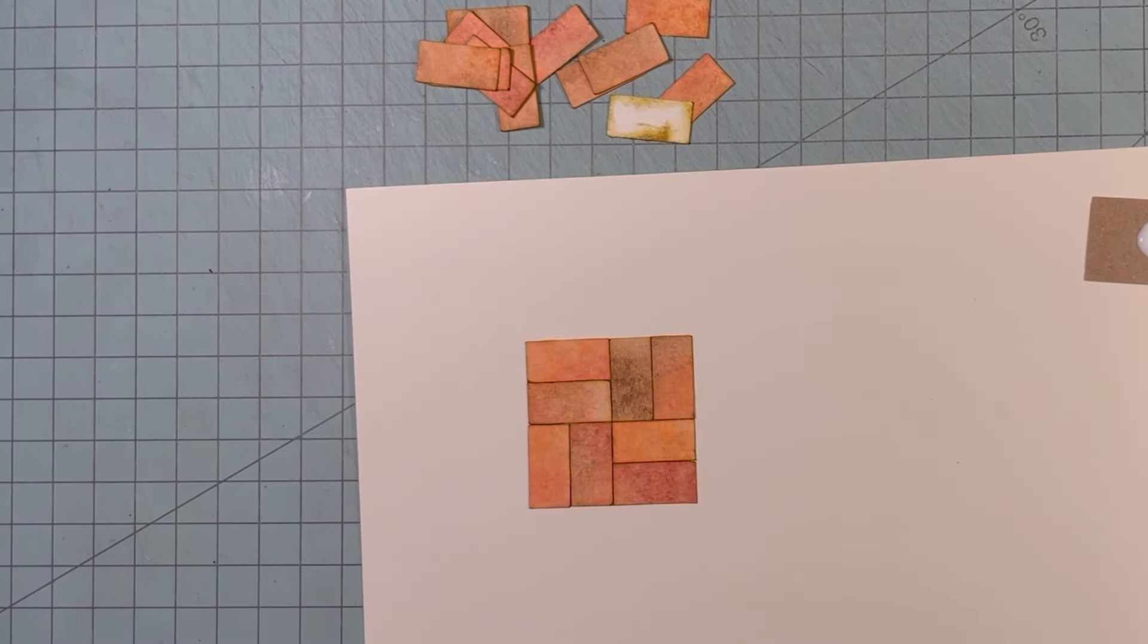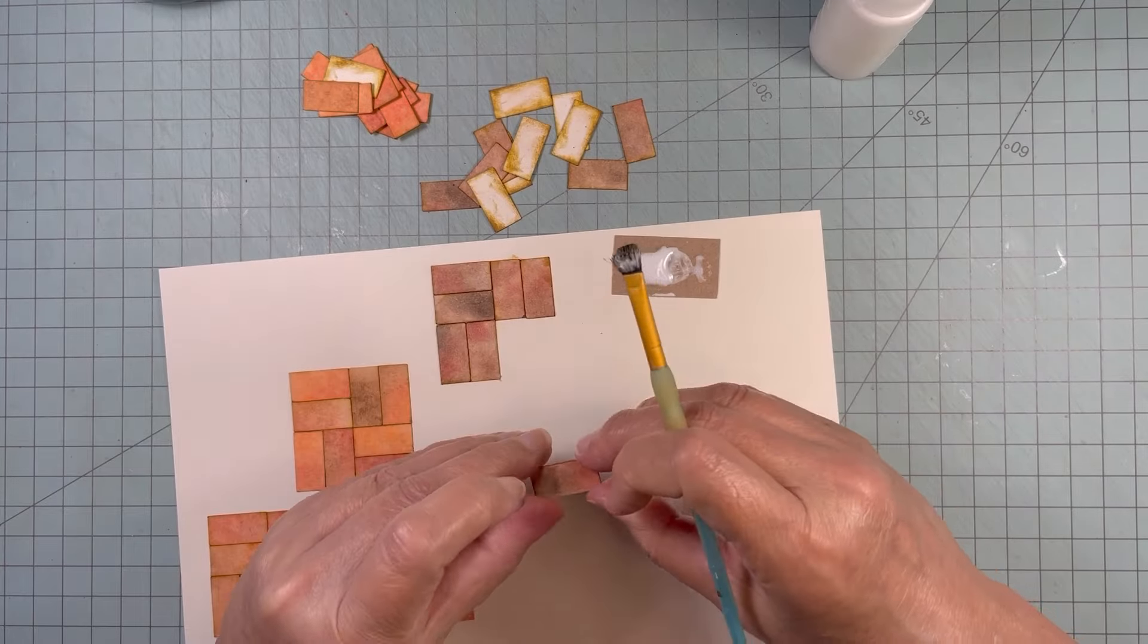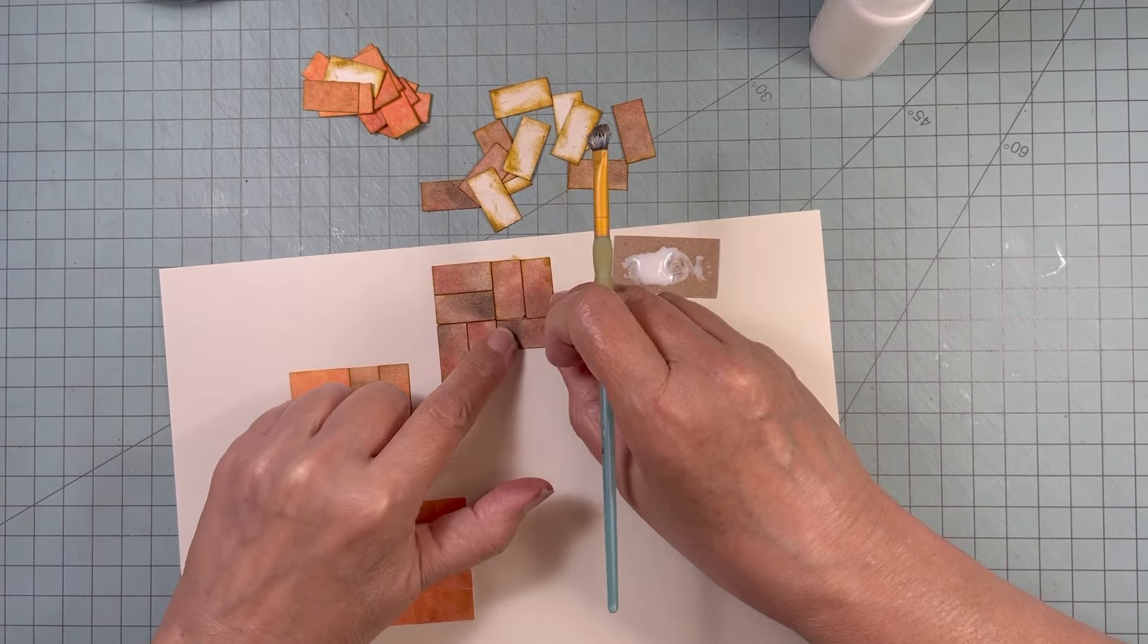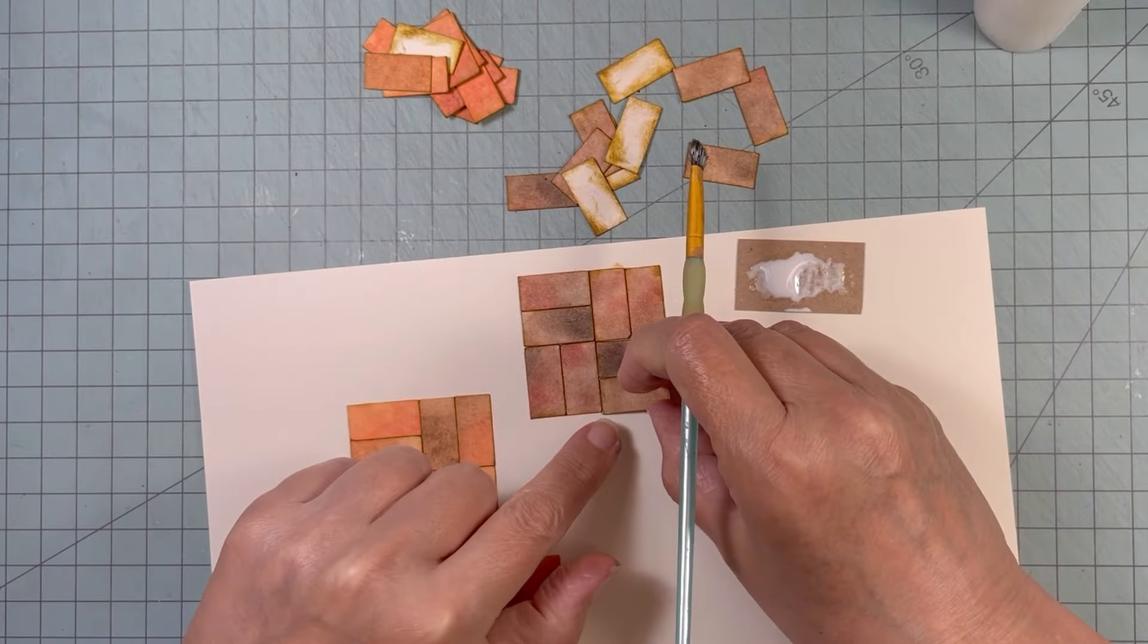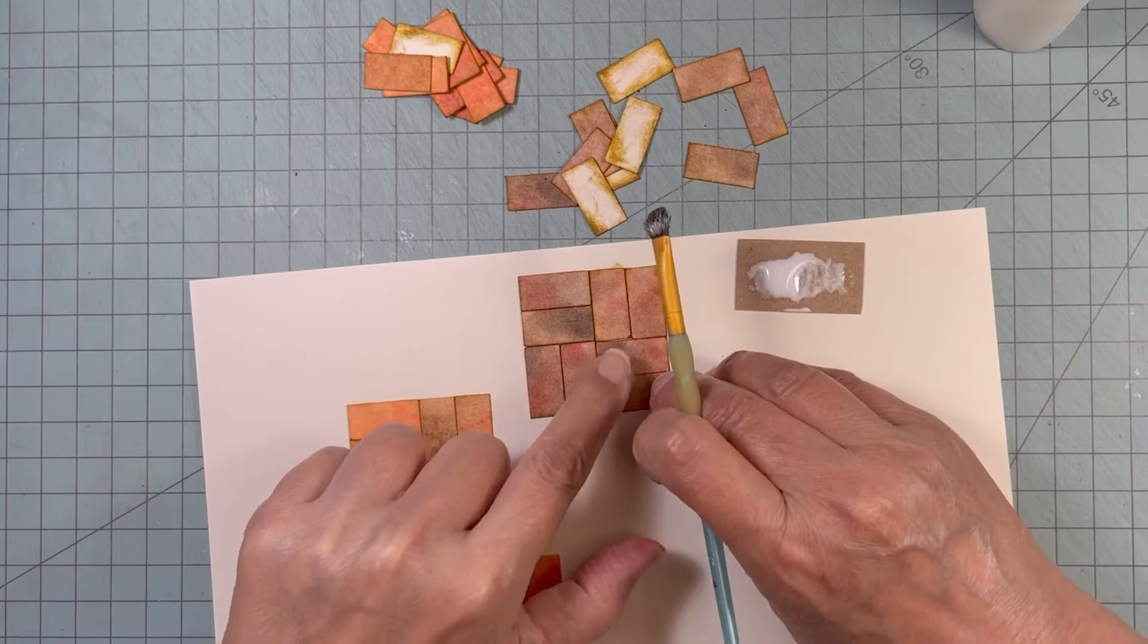This group of tiles is the one where I did the shades of brown. And I did ink the edges on these as well. I really like the way the brown was turning out.